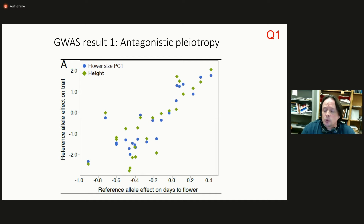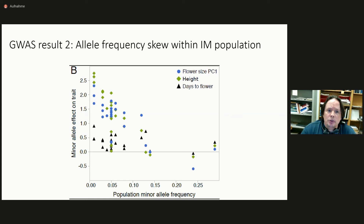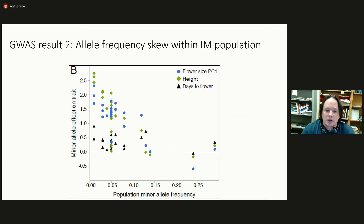The second result from the GWAS is that if we look at allele frequencies — one of the things that comes out of an association study, not only the effects of alternative alleles but their relative abundance in the population — we almost invariably see that the big slow allele is less common than the small fast allele. What's depicted here is the effect of the minor allele on the trait, and you can see that most of those effects are positive on traits like flower size and height, but their frequency is substantially less than 0.5 among these highly significant SNPs.